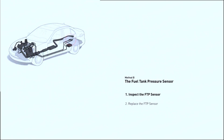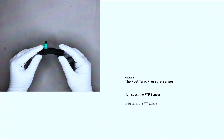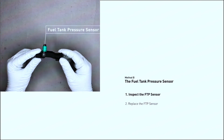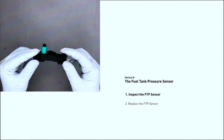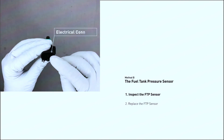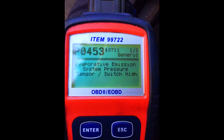Locate the sensor: the FTP sensor is usually mounted on top of the fuel tank or along the fuel line. Consult your repair manual for the exact location. Disconnect the sensor: find the electrical connector plugged into the sensor and carefully detach it. Inspect and replace: examine the sensor and wiring for any damage. If it looks faulty, replace it with a sensor compatible with your car model.